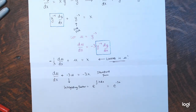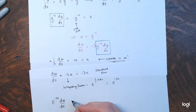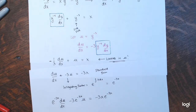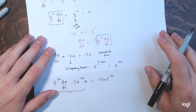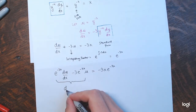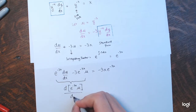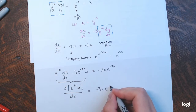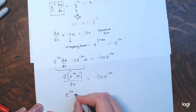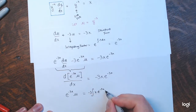Multiplying both sides by e^(−3x): e^(−3x)·du/dx − 3·e^(−3x)·u = −3x·e^(−3x). The left side is the derivative of the product e^(−3x)·u with respect to x. Integrating both sides: e^(−3x)·u = −3 times the integral of x·e^(−3x) dx. I'll evaluate this integral by parts.